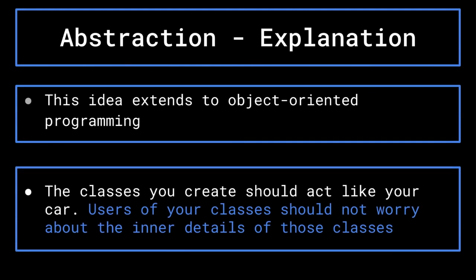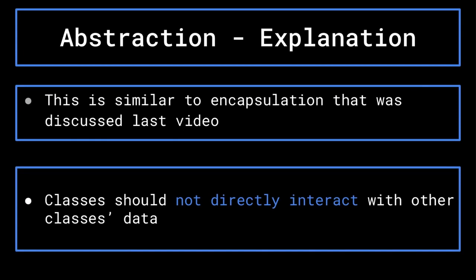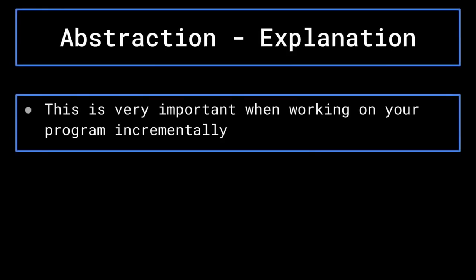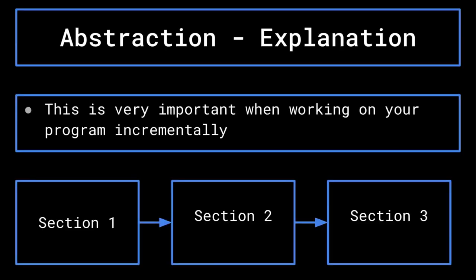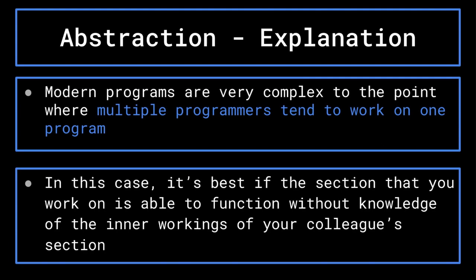This idea extends to object oriented programming. The classes you create should act like your car — users of your classes should not worry about the exact inner details of said classes. This is similar to the idea of encapsulation discussed in the previous section. You should not have classes directly interact with the data stored within other classes; rather, have them use the class's methods to access their data. This idea is especially important when you want to work on your program incrementally, focusing on one class at a time and ensuring that it works. Splitting up your project into smaller chunks can make it much more manageable.